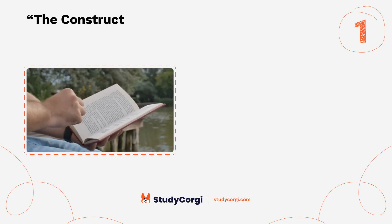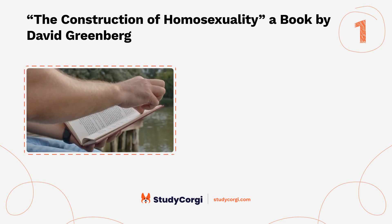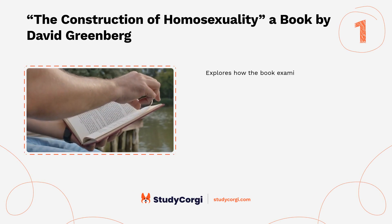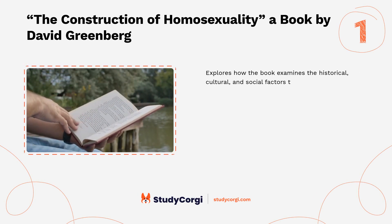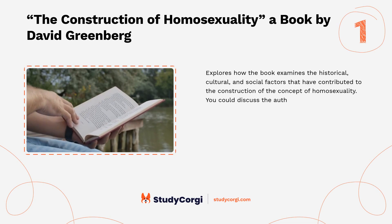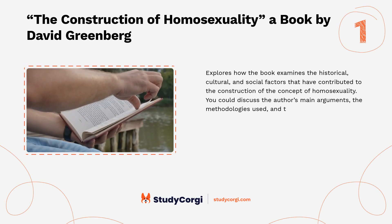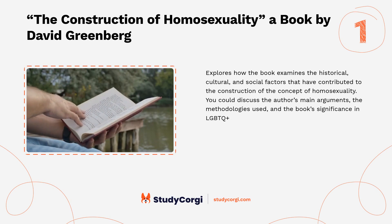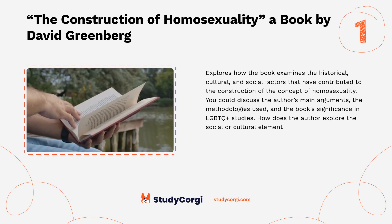The Construction of Homosexuality, a book by David Greenberg, explores the historical, cultural, and social factors that have contributed to the construction of the concept of homosexuality. You could discuss the author's main arguments, the methodologies used, and the book's significance in LGBTQ+ studies. How does the author explore the social or cultural elements that shape the concept of homosexuality?